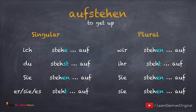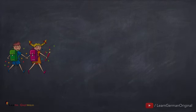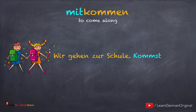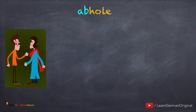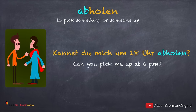Now let's learn some trennbare Verben we use in daily life. The first verb is 'mitkommen' — the prefix is 'mit'. Example: 'Wir gehen zur Schule. Kommst du mit?' The next verb is 'abholen', where the prefix is 'ab'. Example: 'Kannst du mich um 18 Uhr abholen?' Notice that since we are using a modal verb here, the trennbares Verb comes in the infinitive at the end.